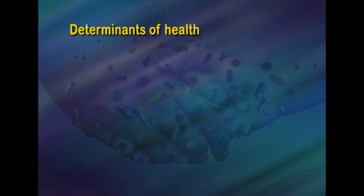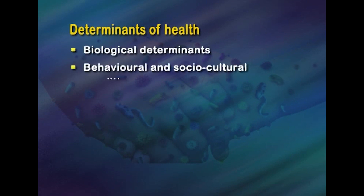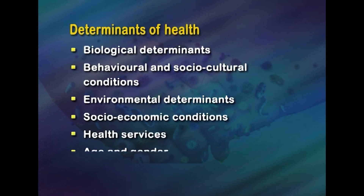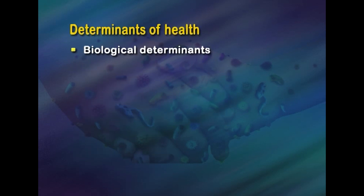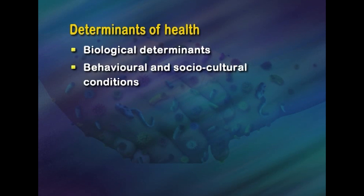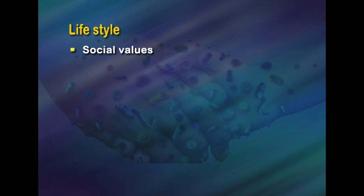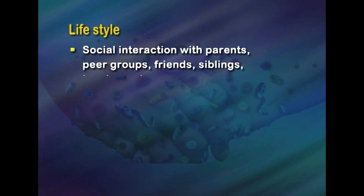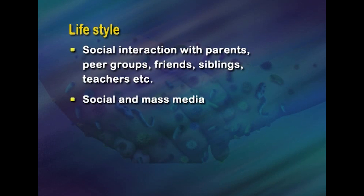The determinants of health include biological determinants, behavioral and socio-cultural conditions, environmental determinants, socio-economic conditions, health services, age, and gender. Biological determinants include heredity and gender. Behavioral and socio-cultural conditions, also known as lifestyle, reflect social values, attributes, and activities. Lifestyle is learned through social interaction with parents, peer groups, friends, siblings, teachers, and social and mass media.